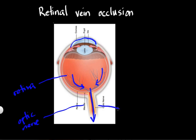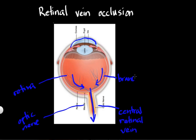All the blood that's fed into the retina has to drain out through these veins down into the central retinal vein. So this central pipe is responsible for draining all of the blood out of the retina. This is the main vein responsible for draining blood out of the retina, and these tiny little branches are called branch retinal veins. There are dozens of little branch retinal veins that all feed into one central retinal vein.